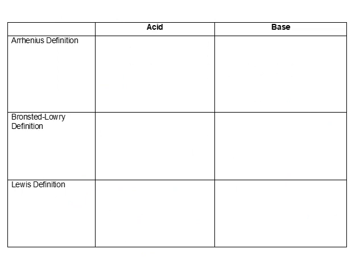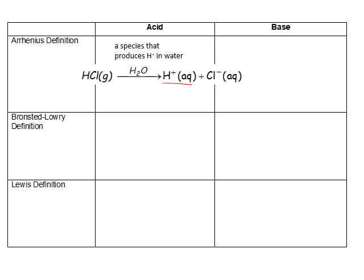There are three common definitions for acids and bases: the Arrhenius definition, the Bronsted-Lowry definition, and the Lewis definition. The Arrhenius definition defines an acid as a species that will produce H plus in water. We've already seen that HCl is an acid. When HCl gas dissolves in water, it forms H plus and chloride. So again we see that HCl is an Arrhenius acid because it produces the H plus species in water.